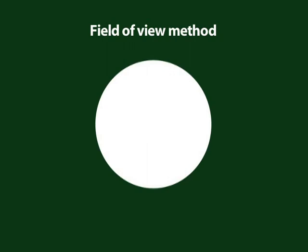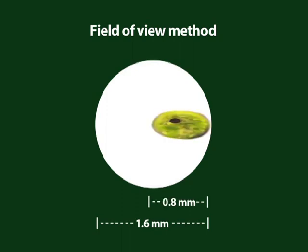For example, if a field of view at a certain magnification is 1.6 mm across and the object covers one half of that field of view, then the object is about 0.8 mm long.